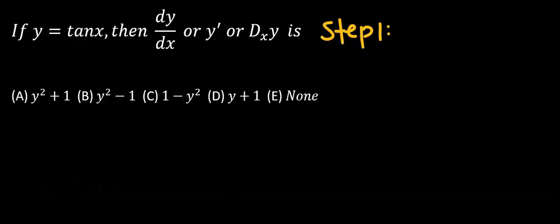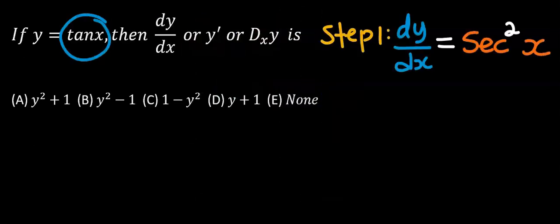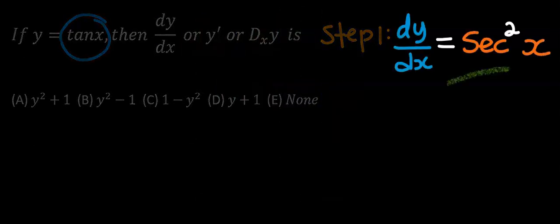Step number 1. Differentiate tan x. From the basic derivative table, if you differentiate tan x, you are going to get sec squared x. Hence, dy/dx is sec squared x.